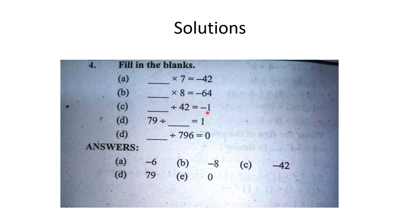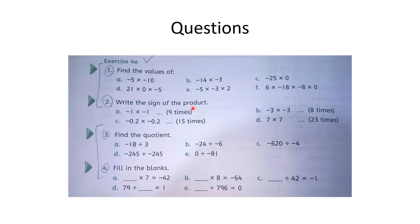C part: divide ka sign hai. 42 ko aise number par divide karein ke answer 1 aaye — to 42 ko 42 par divide karein. Lekin right side par minus ka sign hai, isliye answer minus 1 chahiye. To yahan aapne likhna hai minus 42: minus 42 divided by 42 = minus 1.